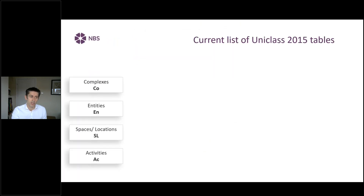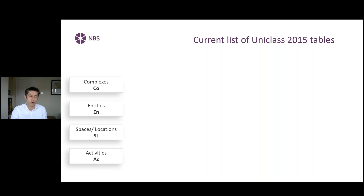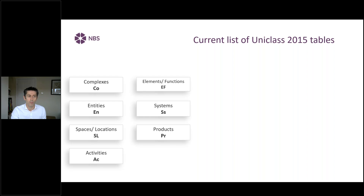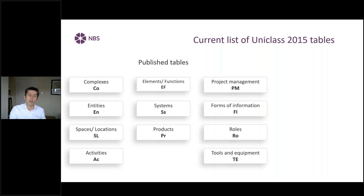The current list of UNICLASS 2015 tables includes complexes, entities, spaces, locations, activities, with common coding between those tables. Things specific to the transport sector are in category 80, environments 32, residential 40 and 45. So there's a real connection between those tables — spaces, buildings, complexes for transport all share a similar numbering scheme. When you break those down you get into elements, systems and products. You can have products which serve many parent systems. We also have tables for project management, forms of information, roles, tools and equipment — so all of the information requirements scattered around your common data environment can have those codes.